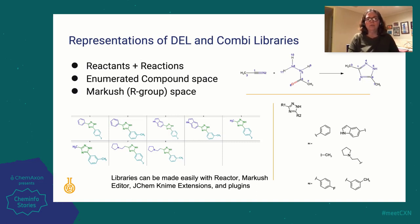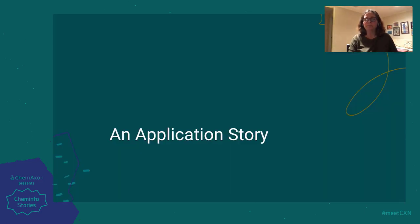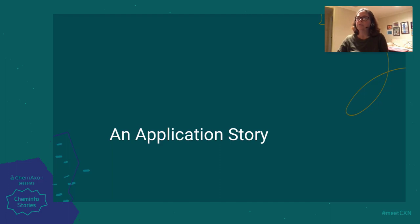These libraries can be made easily with our tools such as Reactor, Markush Editor, and the JChem extensions — I use the JChem extensions quite a bit. Now I wanted to go into an application study — I'll call it more of an application story, because I'm not looking at quantitative experimental results in SAR. I'm just thinking about the process and how our tools can help make the cheminformatics challenges of dealing with huge compound libraries easier.